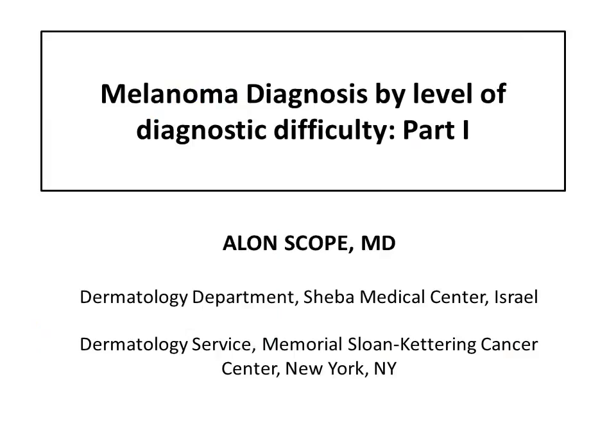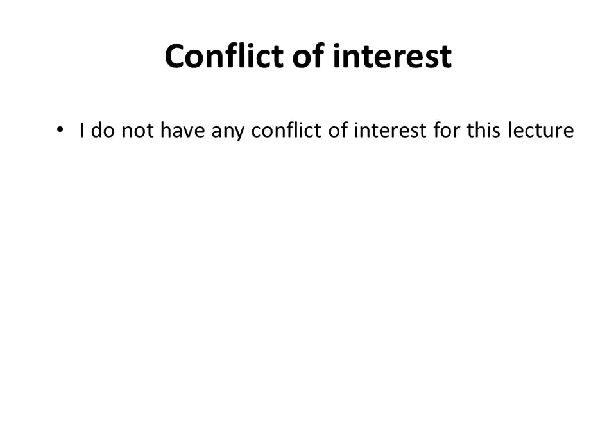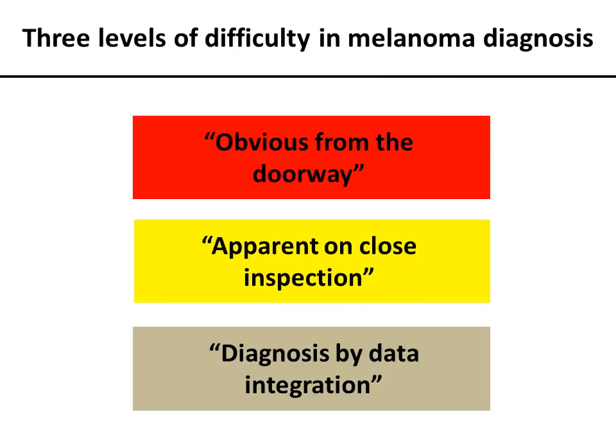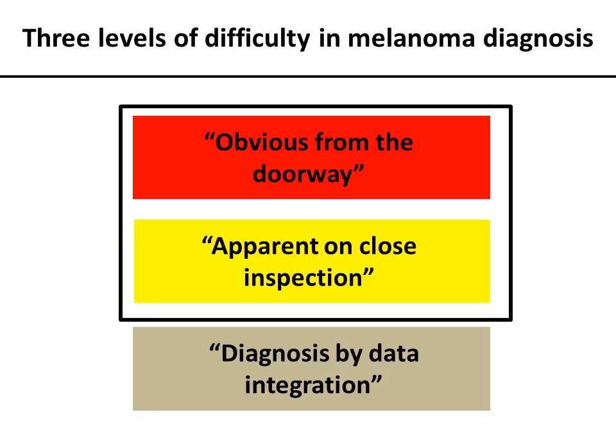I would like to present a model for melanoma diagnosis by the level of diagnostic difficulty. This is part one of a two lecture series. There are three levels of difficulty in melanoma diagnosis: the easy melanomas, the medium difficulty, and the hard-to-diagnose melanomas. In this part one, I'll focus on the easy ones, which I call obvious from the doorway, and the medium difficulty, denoted here in yellow.